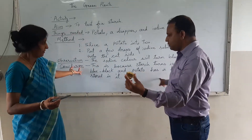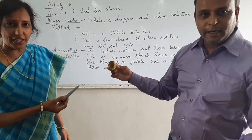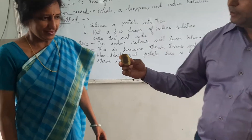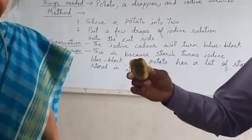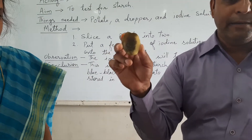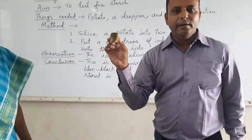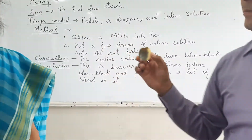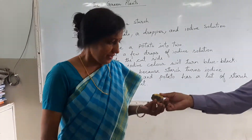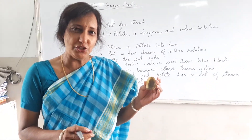This is the conclusion — the color has changed to black. Conclusion: this potato contains starch. The truth is that potato has starch in it. I hope you have enjoyed this activity in the lab of AGI school. Thank you.